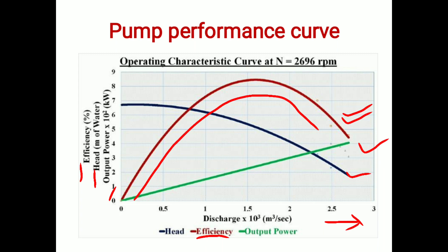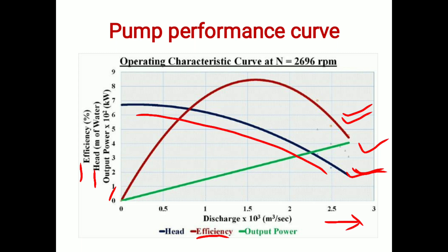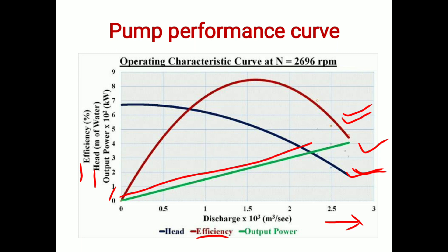After the best efficiency point, if we further increase the discharge, our pump efficiency will decrease. The next curve is head versus discharge: when we increase discharge or flow, pump head decreases, and vice versa — when we increase pump head, discharge decreases. The last curve is output power, which is directly proportional to discharge. When we increase pump discharge, the power requirement also increases. Note that this single curve is plotted for a constant RPM and constant impeller diameter.